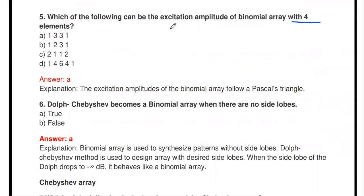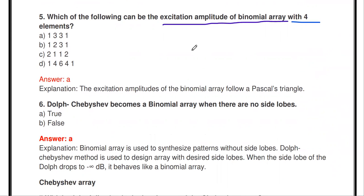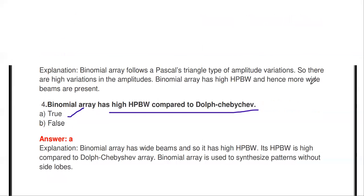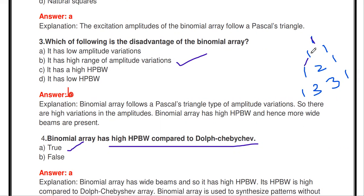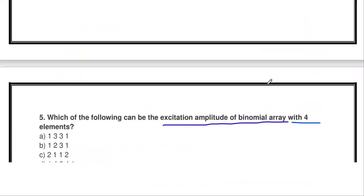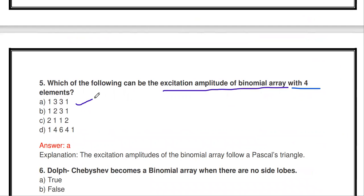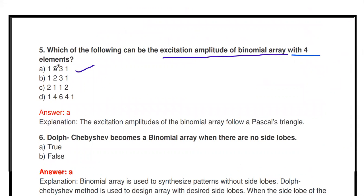Which of the following can be the excitation amplitudes of a binomial array with four elements? To find the excitation amplitudes, we write Pascal's triangle. For two elements: 1, 1. For three elements: 1, 2, 1 (each value is the sum of two above). For four elements: 1, 3, 3, 1. So the excitation amplitudes for a four-element binomial array are 1, 3, 3, 1.